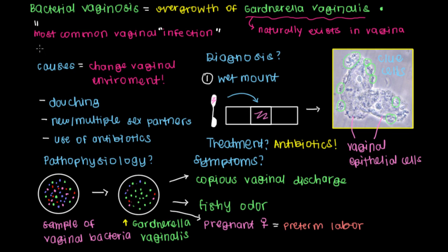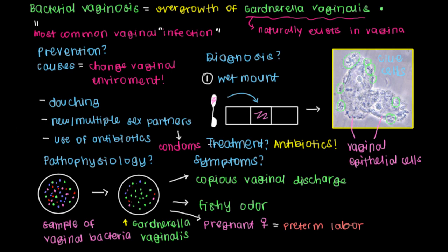How do you prevent BV from happening in the first place? That's a tougher question to answer, because some of the things that cause BV — like using antibiotics to treat pneumonia — well, we have to use antibiotics to treat pneumonia. What is recommended is that when having new or multiple sex partners, use condoms. Beyond that, what doctors usually do when a patient becomes symptomatic is simply treat with antibiotics.